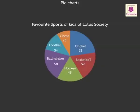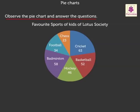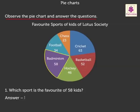Why not solve one more example to understand it in a better way. Look at this pie chart — it shows the favorite sports of all the kids of Lotus Society. Observe the chart and answer the questions. Question one: which sport is the favorite of 58 kids? Badminton is the favorite sport of 58 kids.